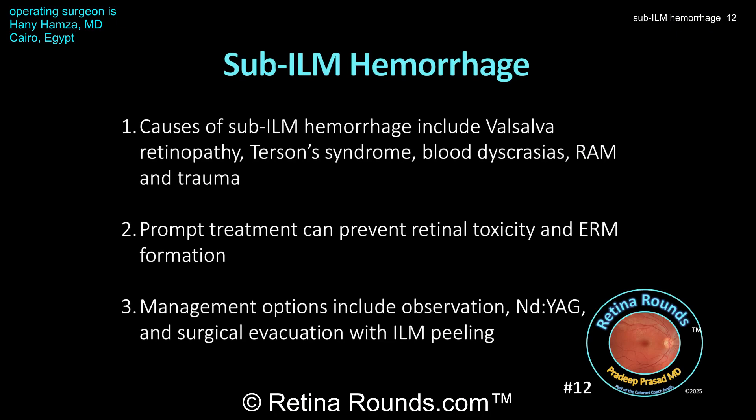Take-home points for sub-ILM hemorrhage management: causes include most typically valsalva retinopathy, usually seen in younger patients. Terson syndrome, blood dyscrasias, retinal arterial macroaneurysms, and trauma can all result in sub-ILM hemorrhage. Prompt treatment helps prevent retinal toxicity, ERM formation, and other complications that could compromise the patient's visual outcome.